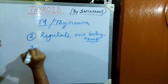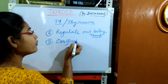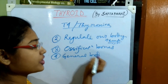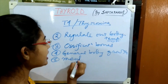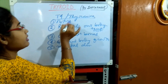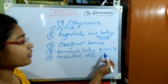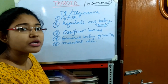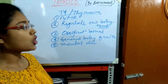The third function of thyroxine is ossification of bones, and the fourth function is general body growth regulation. The fifth function is that it also regulates our mental development. So thyroxine regulates BMR, body temperature, ossification of bones, general body growth, and mental development.